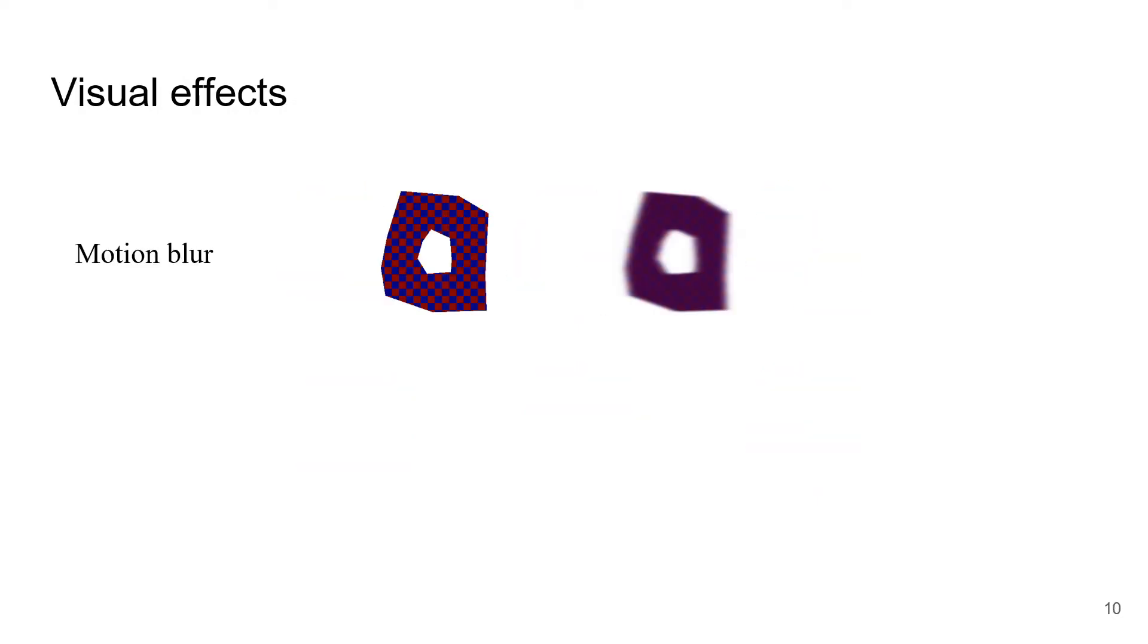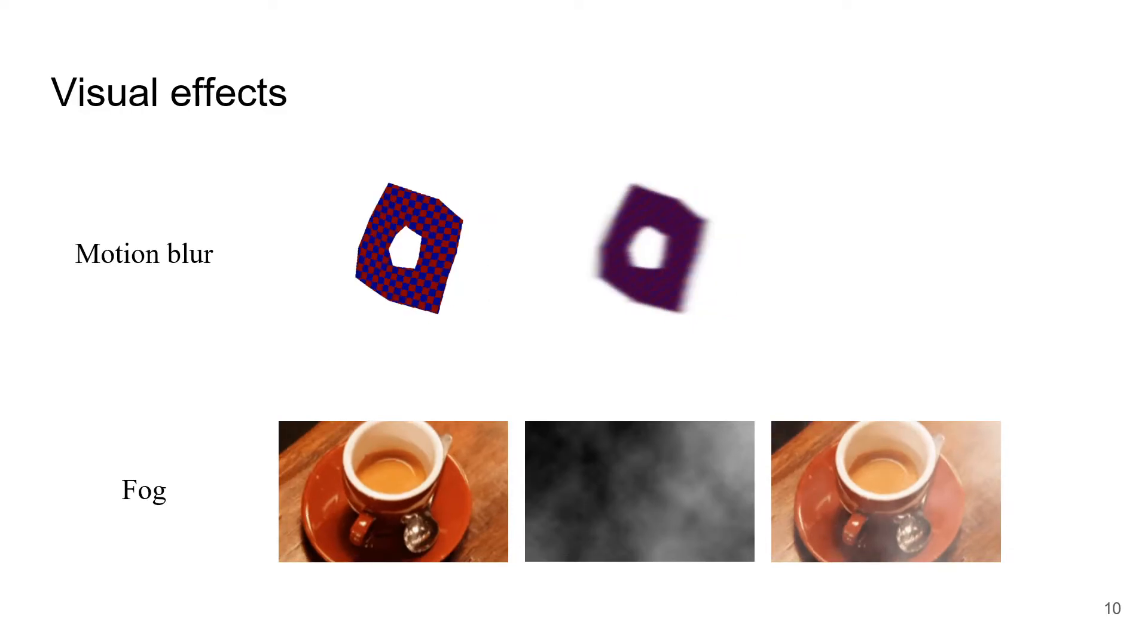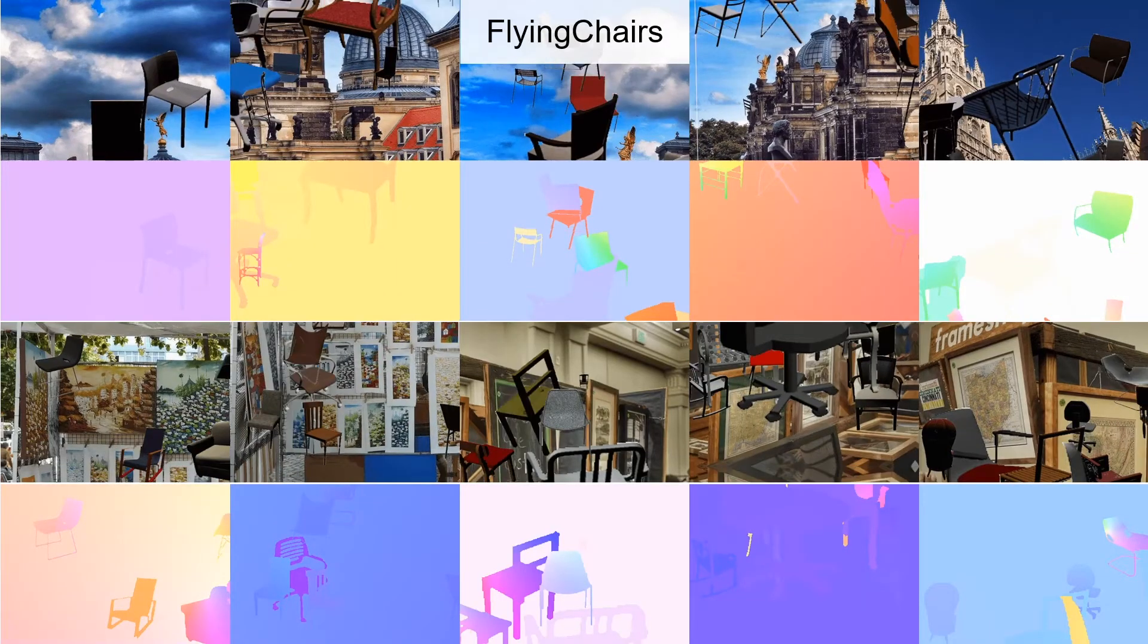For visual appearances, we model motion blur and fog effects. For motion blur, we apply blur to each layer. Here are some samples for image pairs and their optical flow. Please check our project webpage for more visual examples. Here are some samples from flying chairs for comparison.